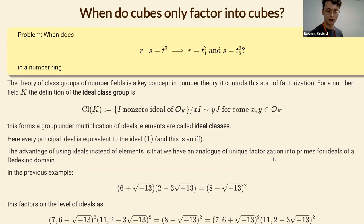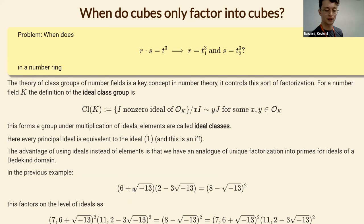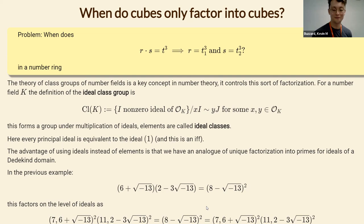An ideal is in the same ideal class as the unit ideal if and only if it's principal. We have unique factorization into prime ideals. In our earlier example, we had a failure of unique factorization of elements, but on the level of ideals everything works: the ideal generated by each element factors uniquely into prime ideals, which explains what went wrong — we should have factored into ideals, not elements.